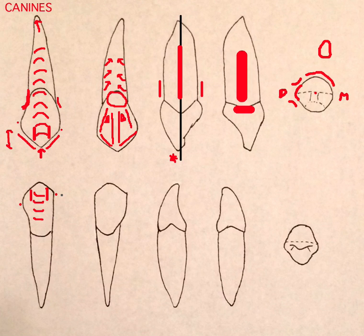That's why the mesial contact on the canine is so high, because those embrasures are going to be symmetrical. And then it swings way down low because of the concavity and convexity relationship we'll discuss.